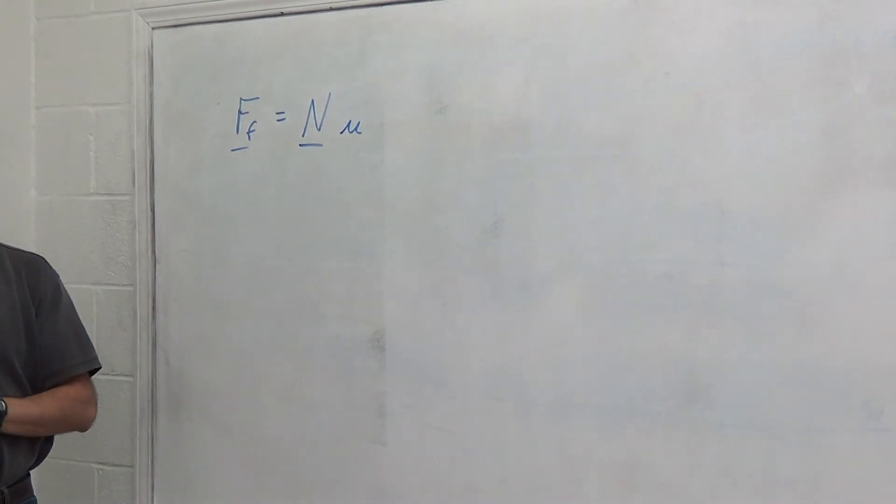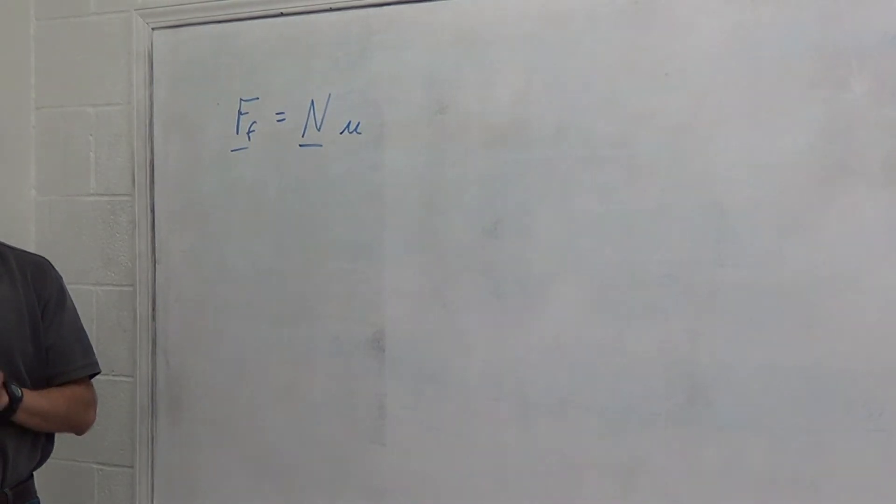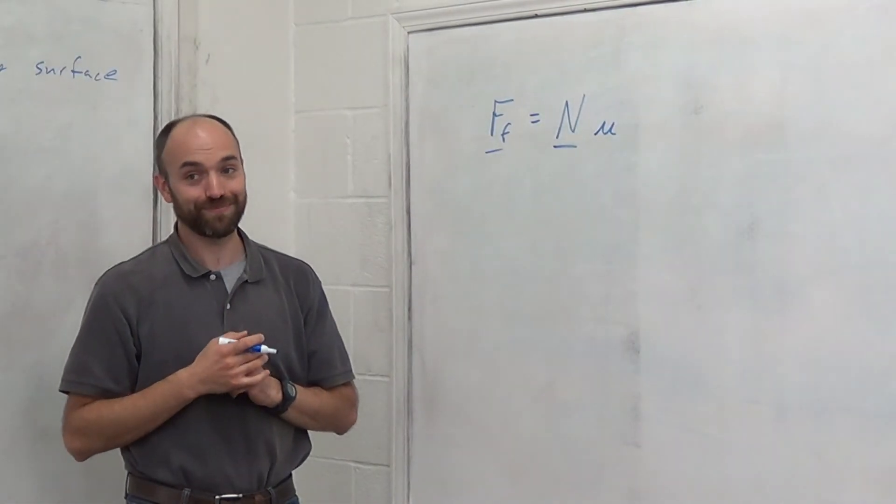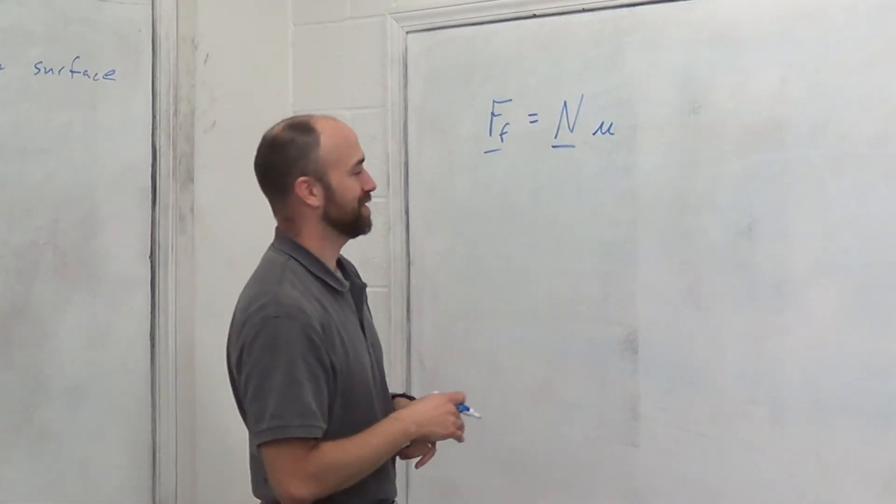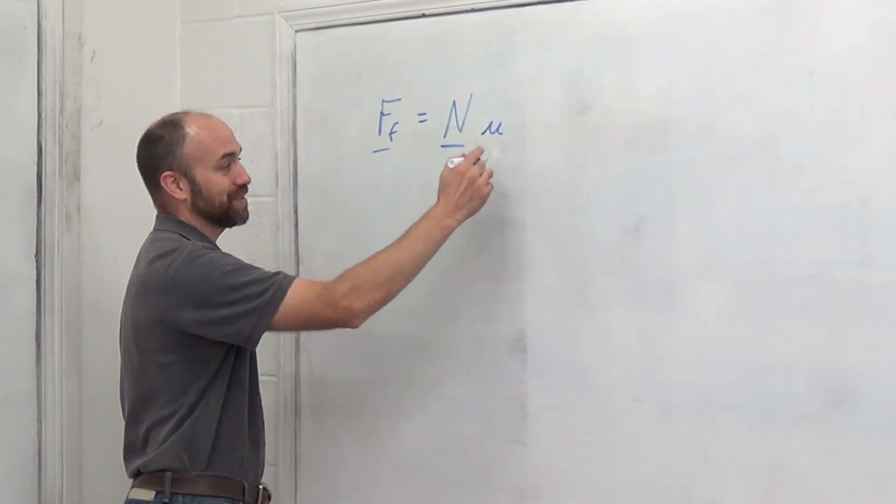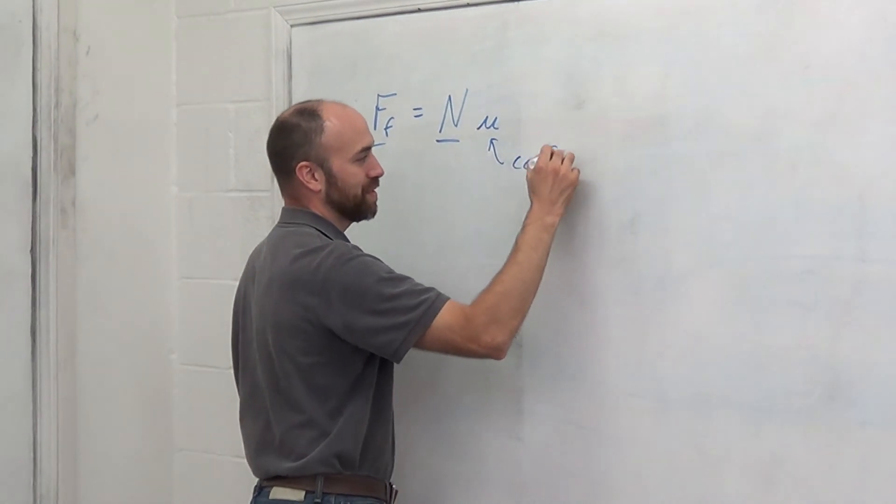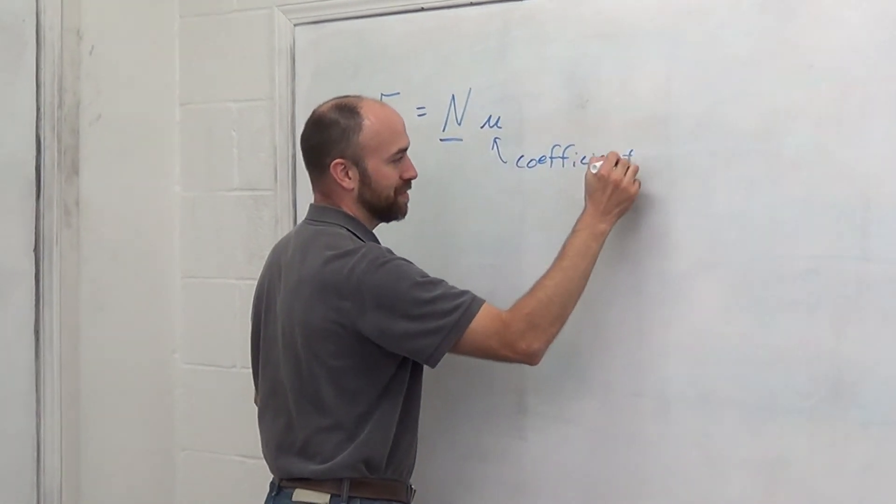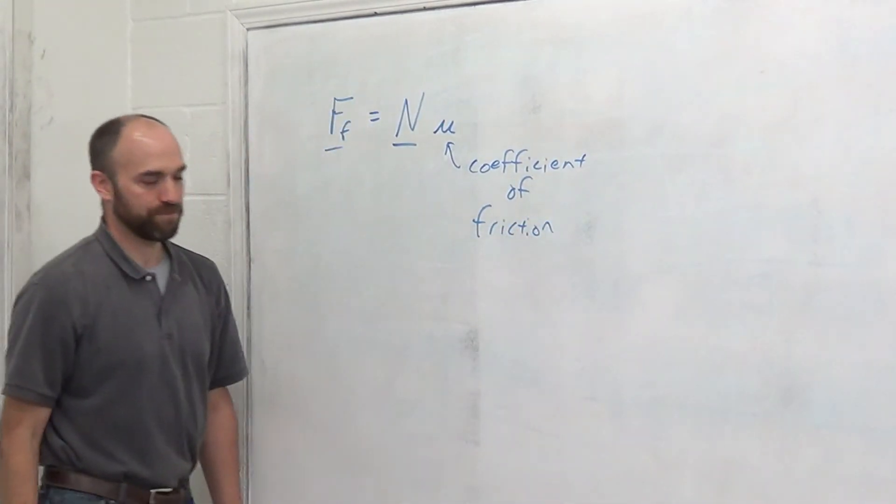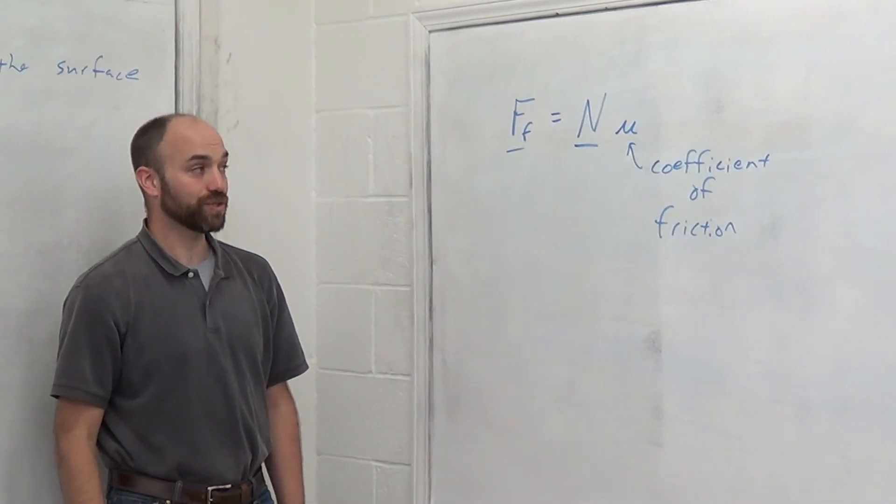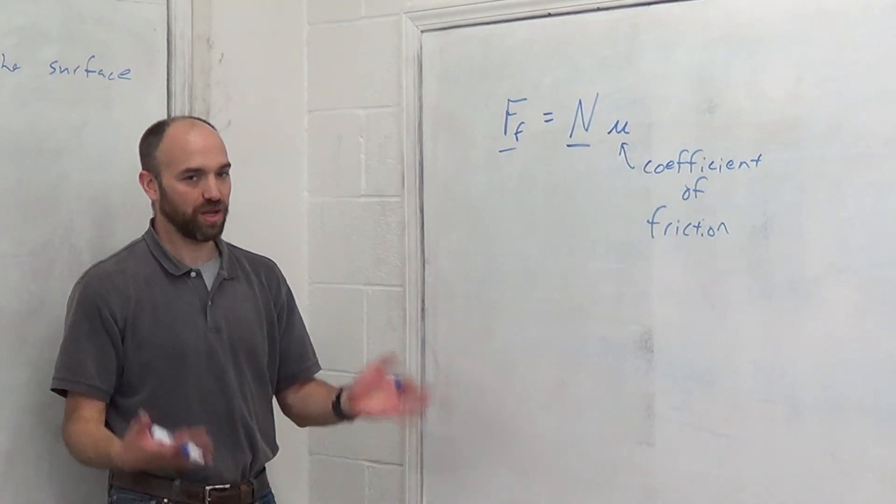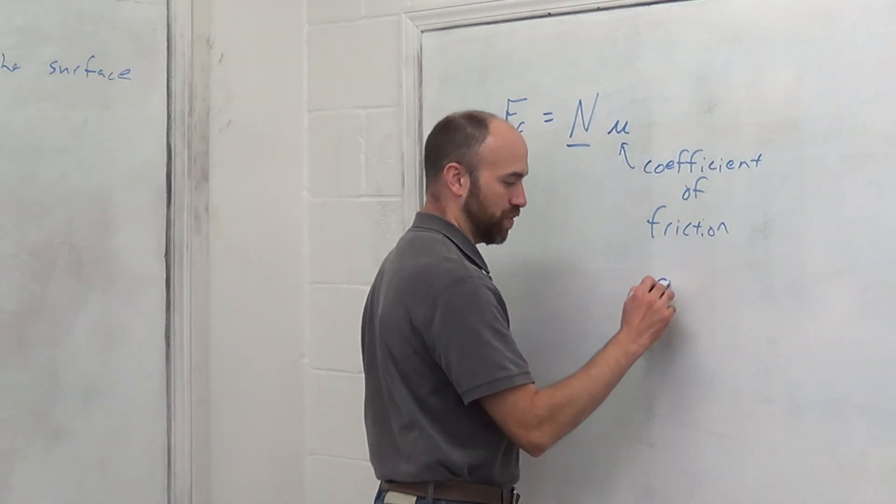Mu is what kitty cats say in England. Around here cats say meow, but over there they say meow. Sorry, that's a silly joke. This is another Greek letter, mu. This is called the coefficient of friction. It's a coefficient that has no units. It's just a number. It is always between zero and one.